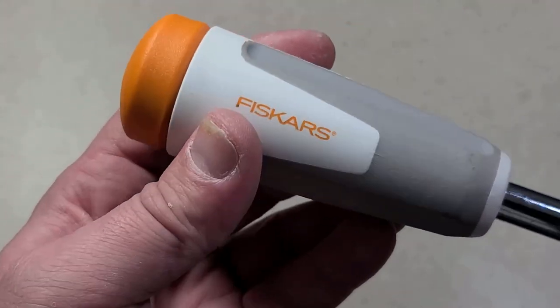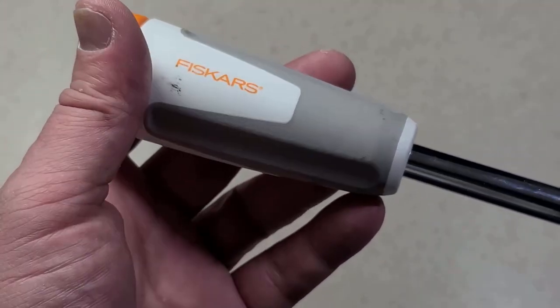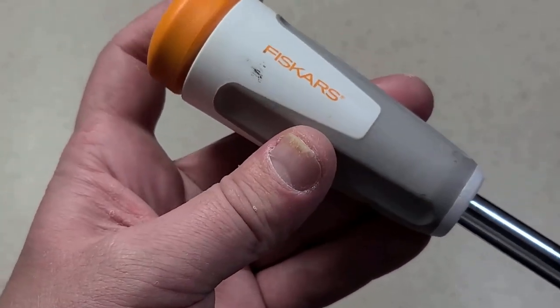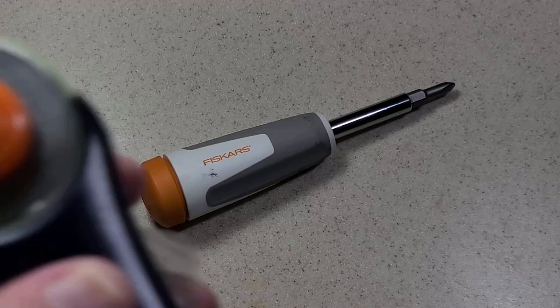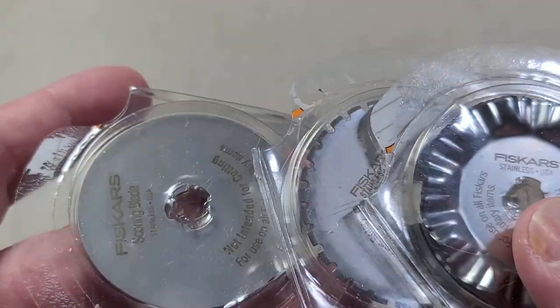Seems like Fiskars is trying to expand beyond various garden tools, hatchets, that type of stuff as well as some hobby type things. Things like rotary cutters with various shapes and styles of blades.